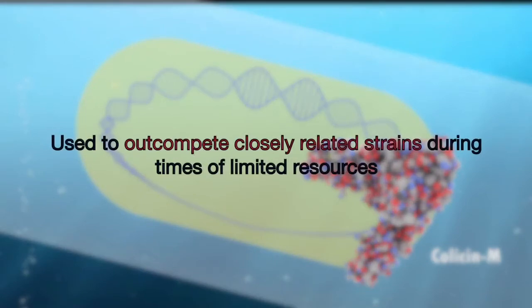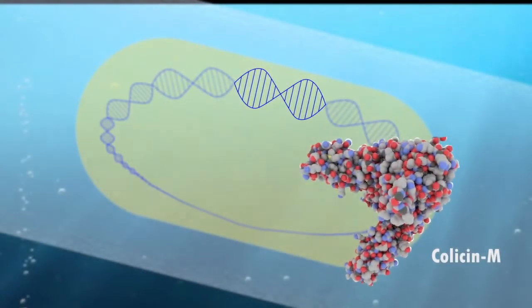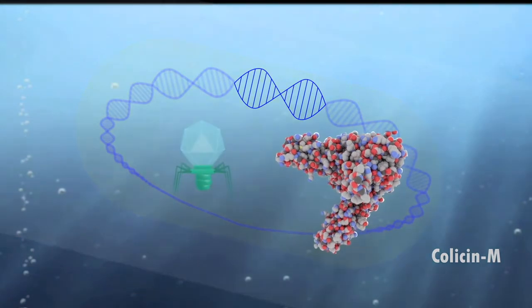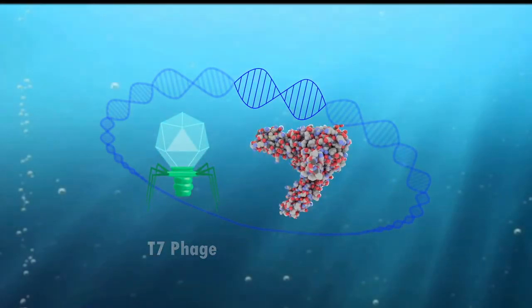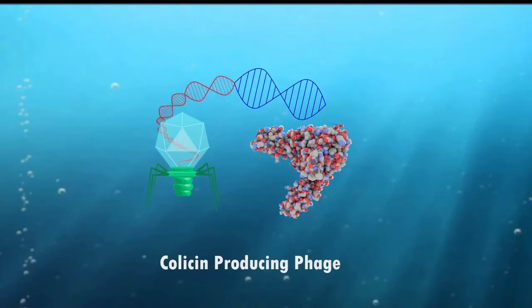A Collicin is a type of bacteriocin, or microbial toxin, that is produced by and targets some strains of E. coli. And we've inserted the Collicin gene into the DNA of a lytic phage known as T7, resulting in a genetically engineered phage that co-expresses a Collicin.